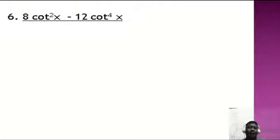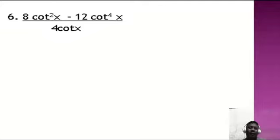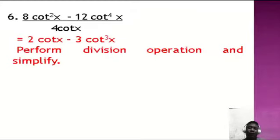Number six: 8 cotangent squared x minus 12 cotangent to the 4th x, divided by 4 cotangent x. You are dividing a binomial by a monomial. So: 8 divided by 4 is 2 cotangent x, minus 12 divided by 4 is 3 cotangent cubed x. We perform division and simplify using the quotient rule in the laws of exponents.